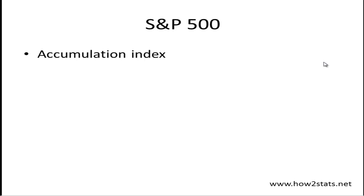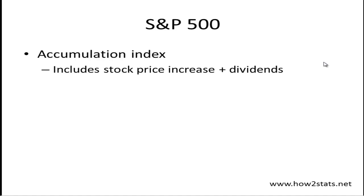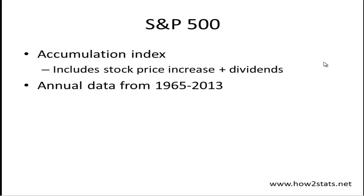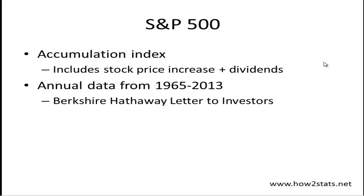I looked at a couple of indices. One is the S&P 500, which is the US-based index. I also looked at the Australian index, which I'll show second. For the S&P 500, I looked at the accumulation index, which includes stock price movements as well as dividends — so that's really your total return from the stock market. I've got annual data from 1965 to 2013, and I got those data from Berkshire Hathaway's letter to investors, which on the very first page lists all the investment returns for each year from 1965 to 2013.